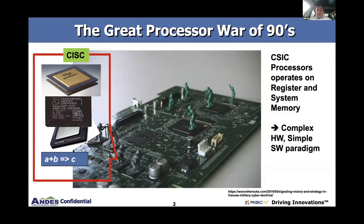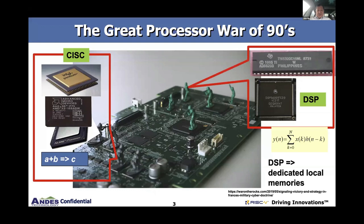The value of this CISC processor was it could operate on a register and a memory location. Basically, to make software simpler, it had complex hardware. Then came along RISC processors, and DSPs — specialized processors that did math very well. One thing DSP did was it operated on registers for local memories, so it had high memory bandwidth.